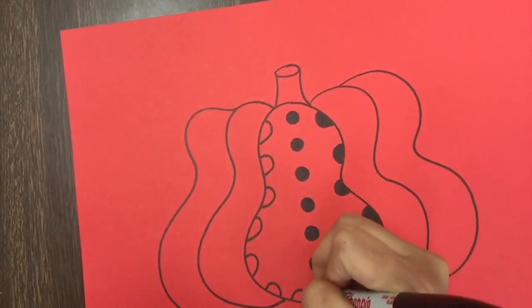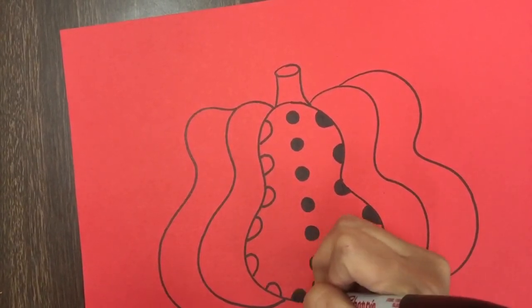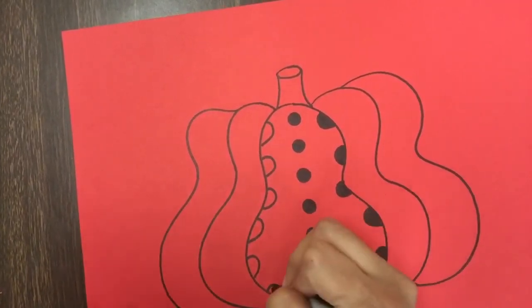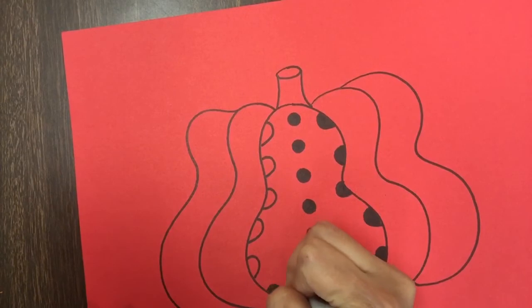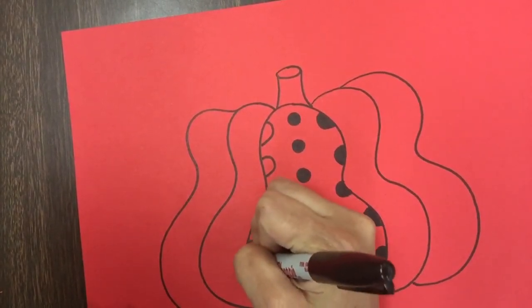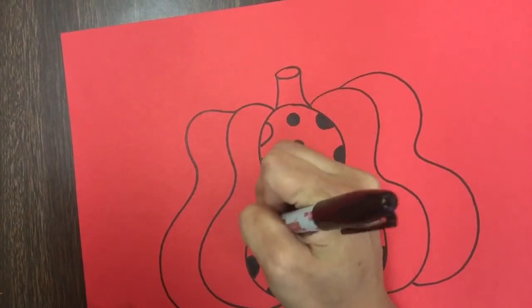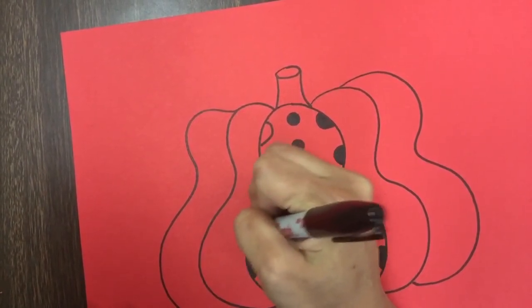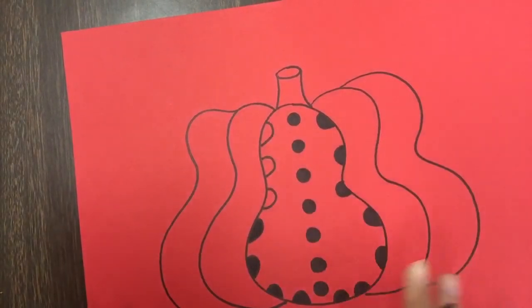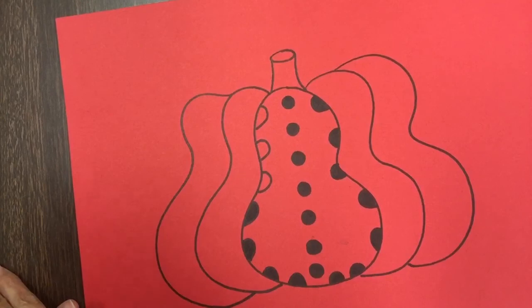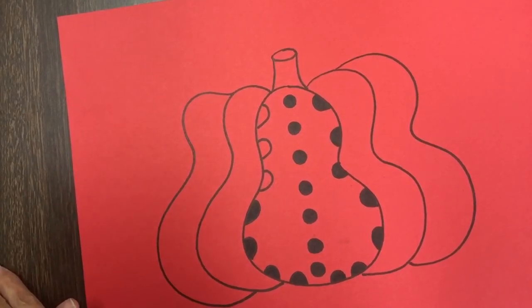Once you are done with that part, you are then just going to place your artwork in your folder or somewhere safe for next week. And then I will tell you what we're going to exactly do with our pumpkins. But it's really important that you hold on to these and don't lose them, okay? So, I hope you enjoyed this first part of the lesson and I will see you guys next week. Bye!